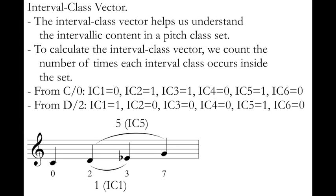Next, I'll count intervals starting on D — pitch class 2. I don't need to count D to C; I already counted that starting from C, so I'll just count D to my other pitches. D to E-flat is pitch class interval 1 — 3 minus 2 is 1 — belonging to interval class 1. D to G: 7 minus 2 is 5, belonging to interval class 5. From D: 1 interval class 1, 0 interval class 2, 0 interval class 3, 0 interval class 4, 1 interval class 5, and 0 interval class 6.